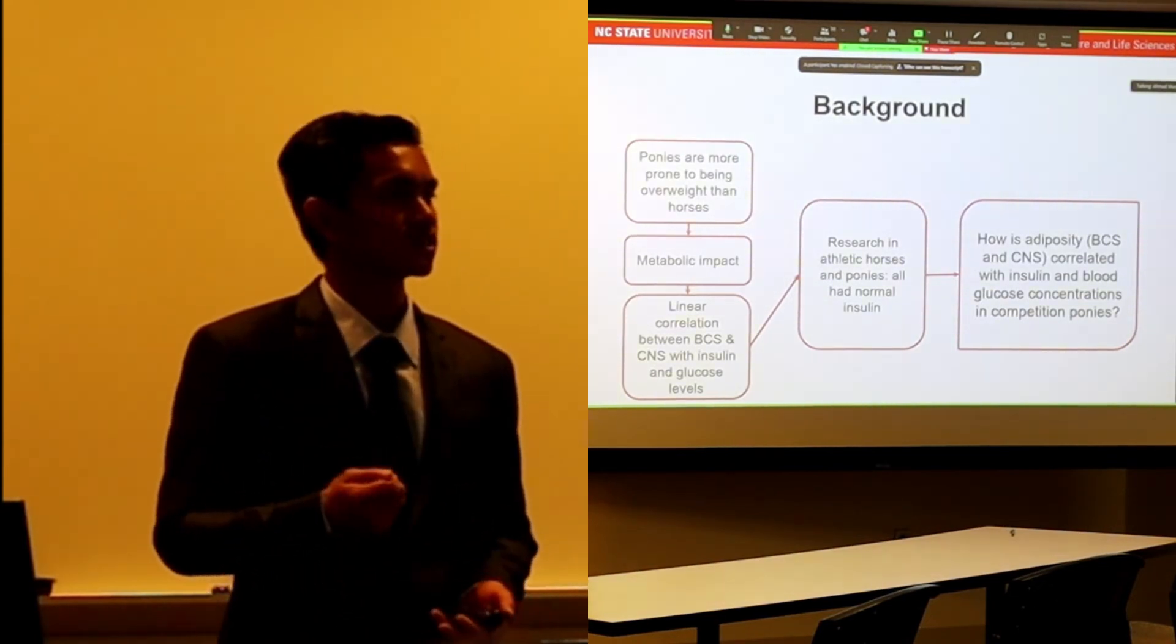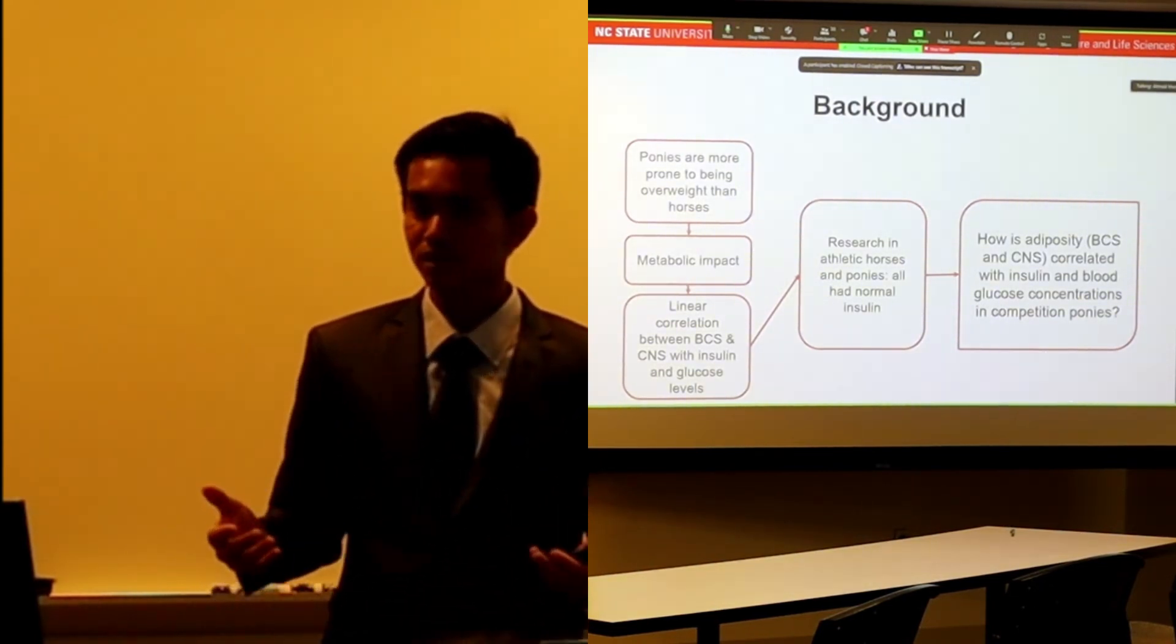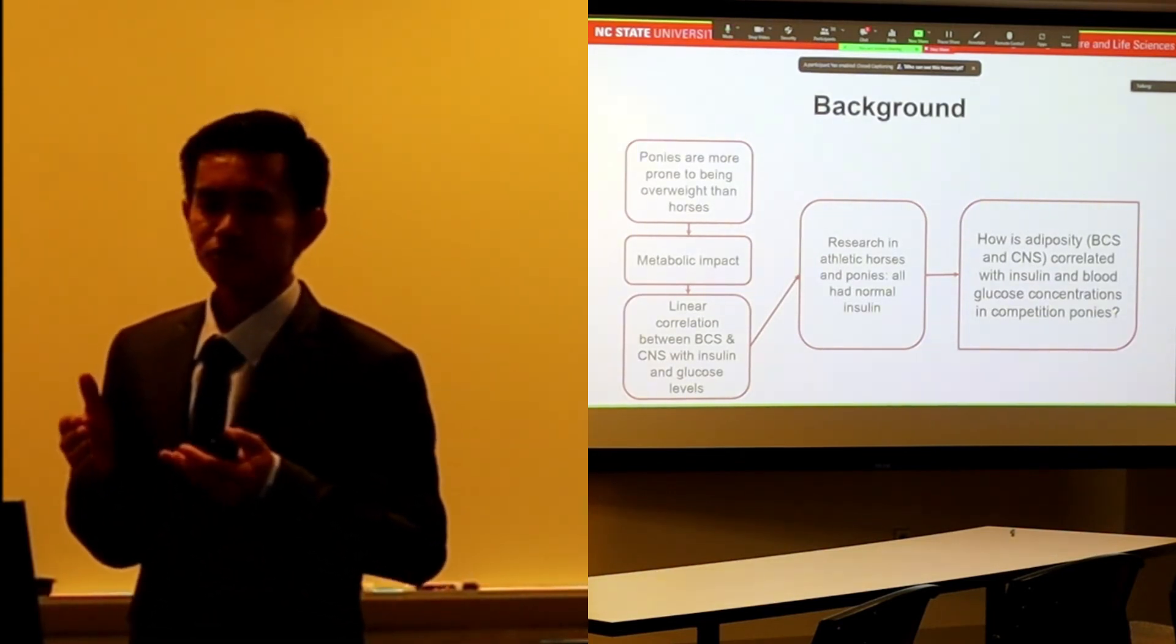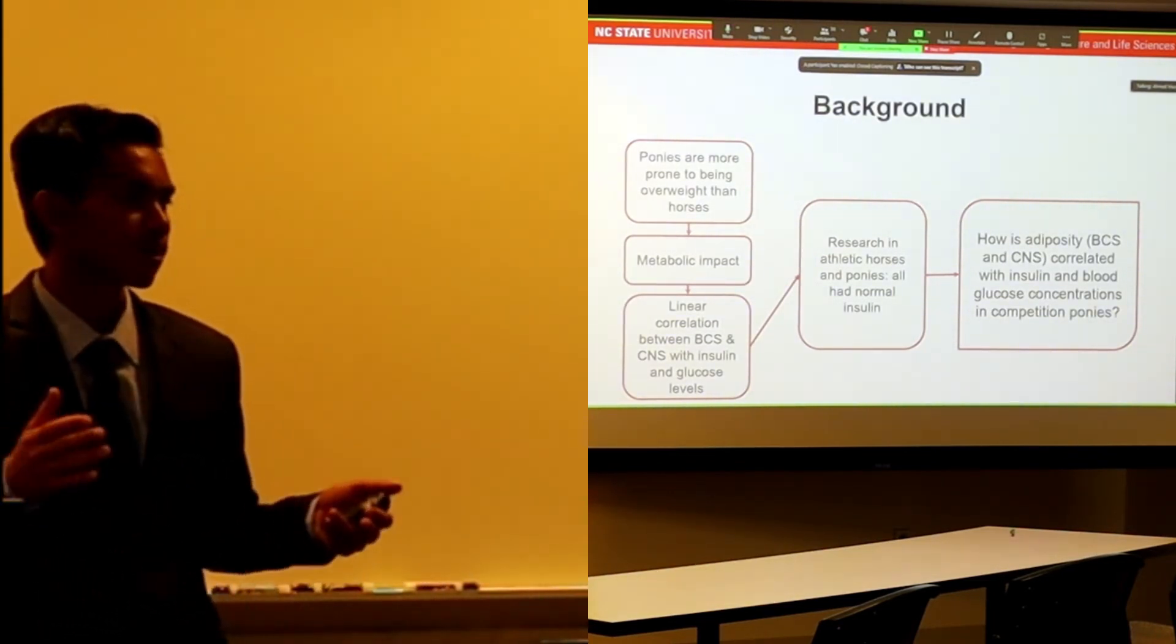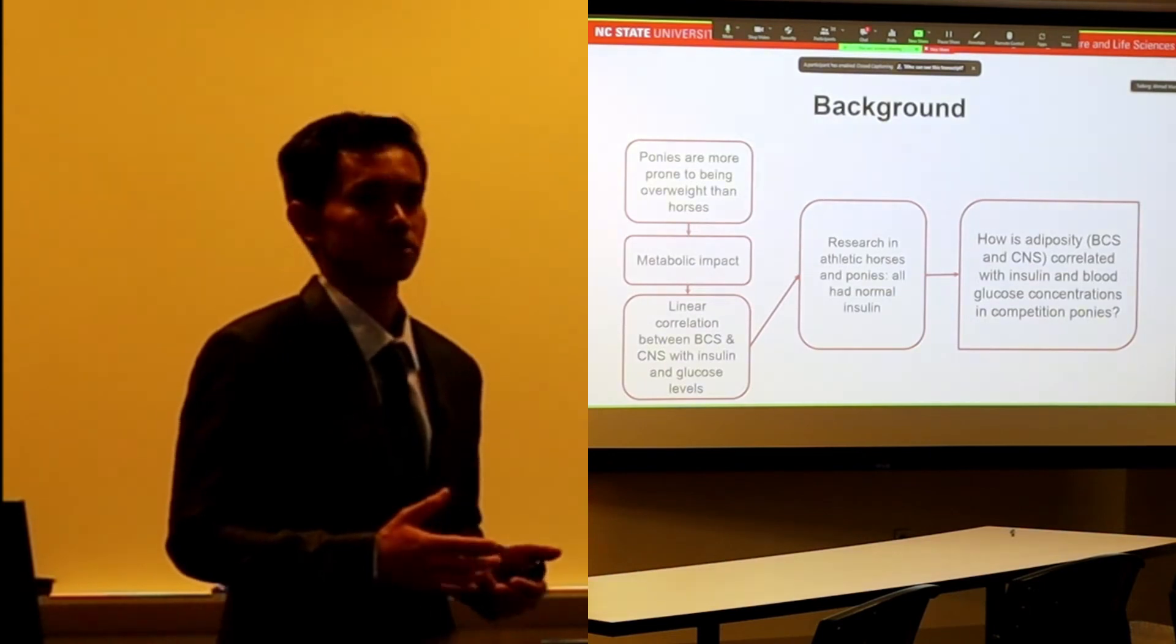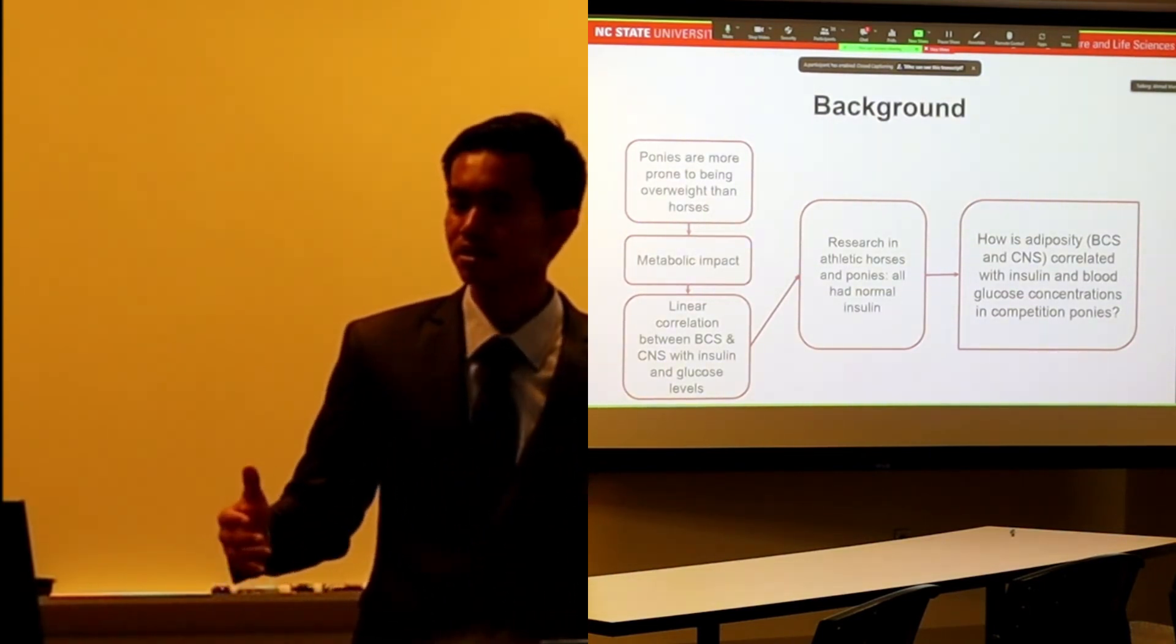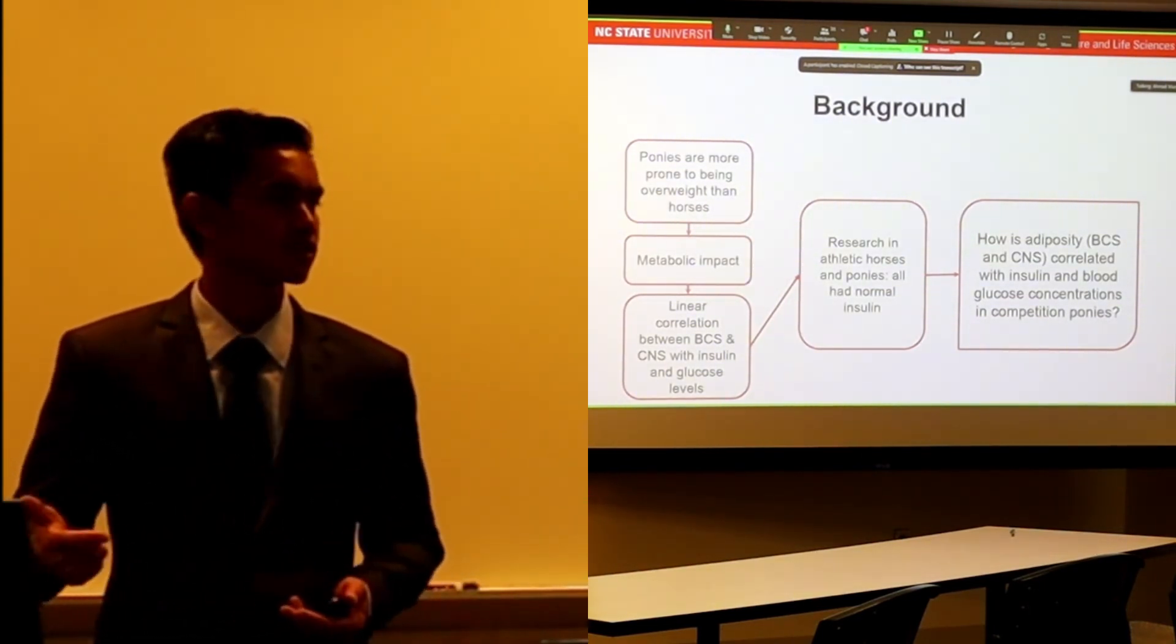Previous studies showed linear correlation between adiposity and insulin and glucose levels. Specifically, there was one research in 2009 that showed differences in body condition scores and cresty neck scores between different types of sport horses: polo, dressage, hunter horses, and hunter ponies.